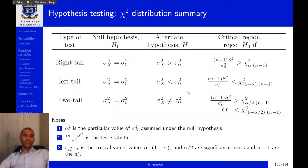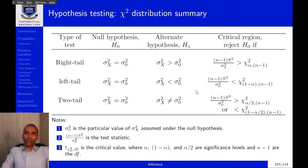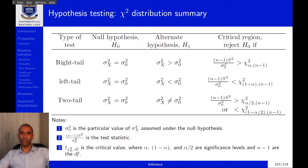Next we move on to hypothesis testing for the variance of a population. The process is identical to what it was for the mean. The only difference is that we use a different test statistic given by the chi-square expression, and we find our critical value in the chi-square distribution table. The alternative hypotheses relate to right-tailed, left-tailed, and two-tailed tests in the same way as for the mean.